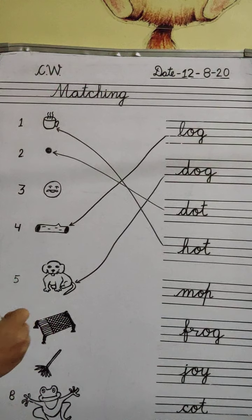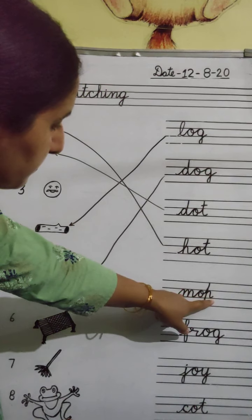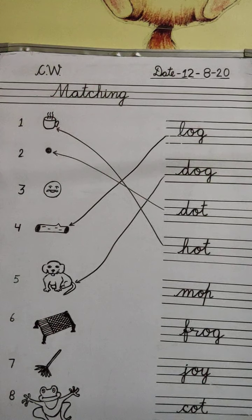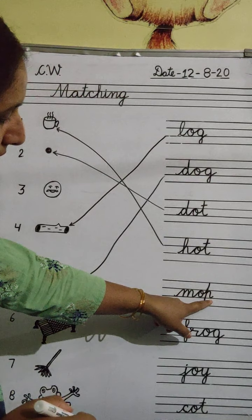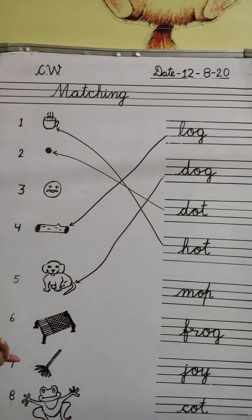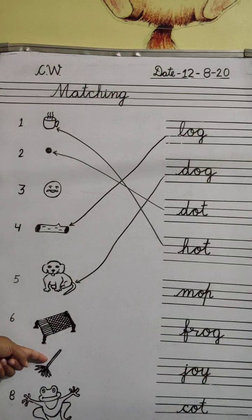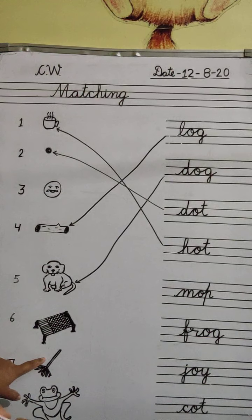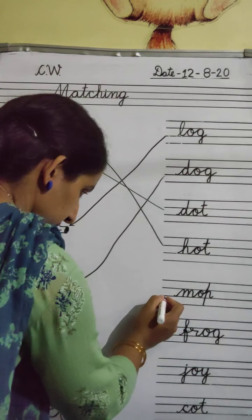Next, M-O-P — Mop. What is this? M-O-P, Mop. And where is the picture of Mop? We will check. Is this? No. Is this? No. Is this? Yes, this is the picture of Mop. Mop means pocha — a floor mop.